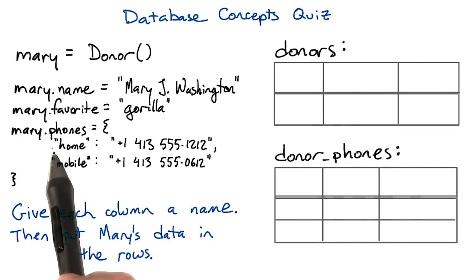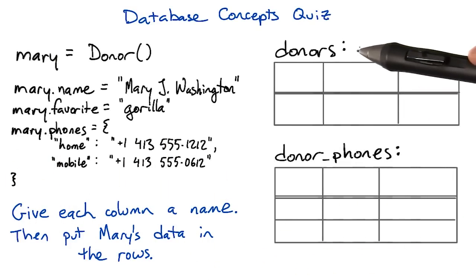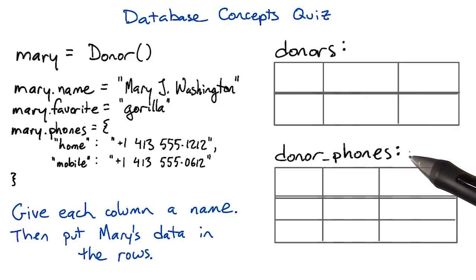Because a person can have more than one phone number, we're going to want one table for donors and one for donor phone numbers. This is the same sort of situation as when we had animals that eat multiple different kinds of food.